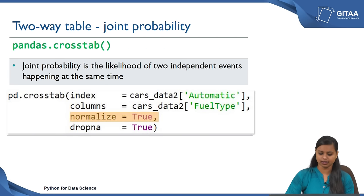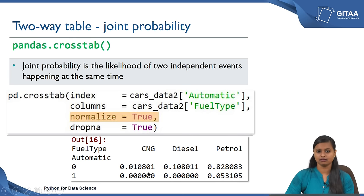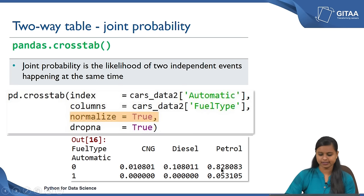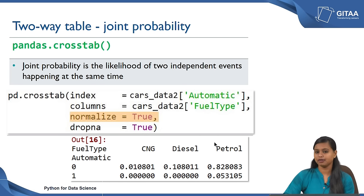Now let us see how the output will look like. The table values have been converted from numbers to proportions. You can interpret the output like this: the joint probability of the car having a manual gearbox and having fuel type CNG is only 0.01. But the value 0.82 represents that the joint probability of the car having a manual gearbox and fuel type petrol is really high. And there is no probability that you will get a car with an automatic gearbox as well as fuel type CNG or diesel. All these interpretations are based on the data we have now.